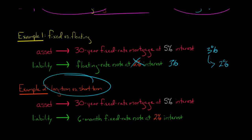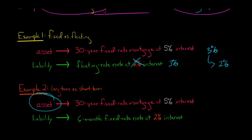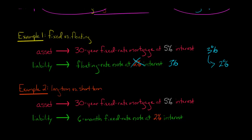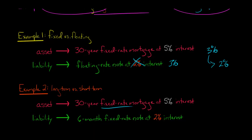If we have a long-term and short-term mismatch, we can also have issues. Let's say we've got a single asset — a 30-year fixed rate mortgage at 5% interest — but this time the liability is a six-month fixed rate note. So it's not floating; we've got a fixed rate asset and a fixed rate liability, but the liability matures in six months.